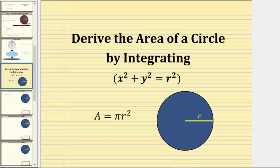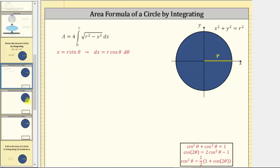In this video, we will derive the area of a circle using integration and the equation of a circle, x squared plus y squared equals r squared. Here is the graph of the circle centered at the origin with a radius of r.